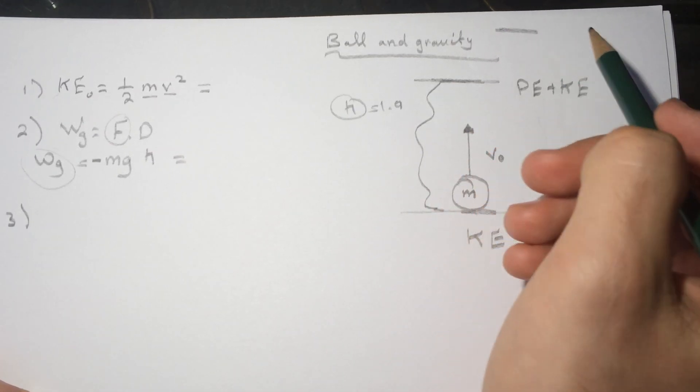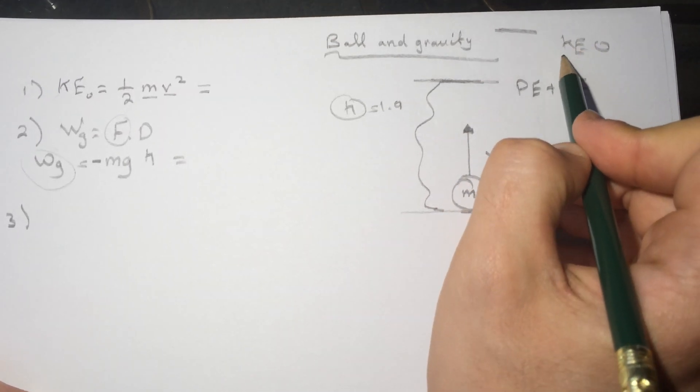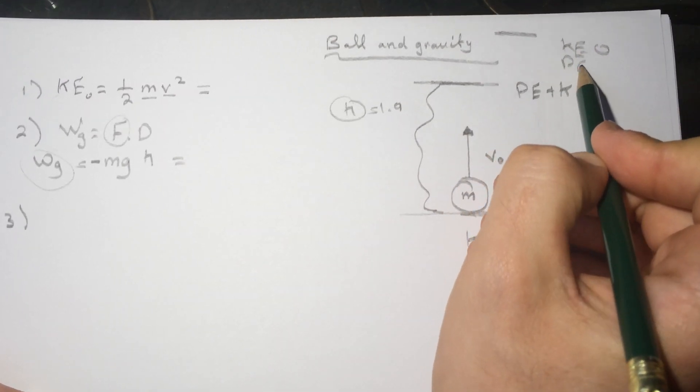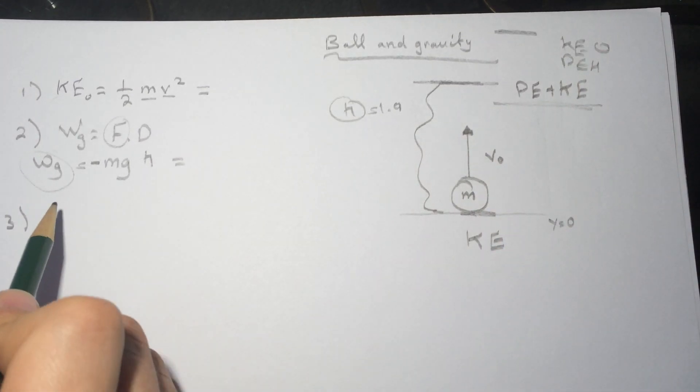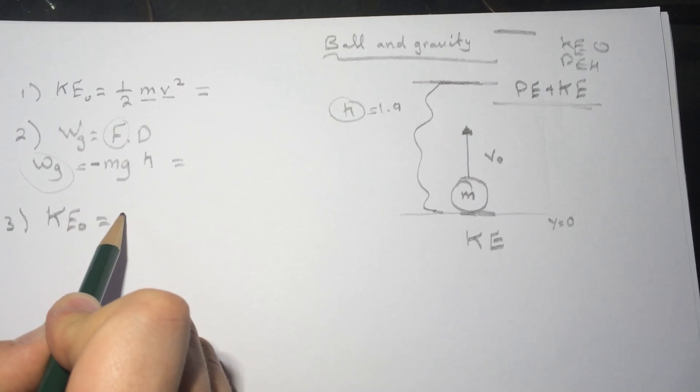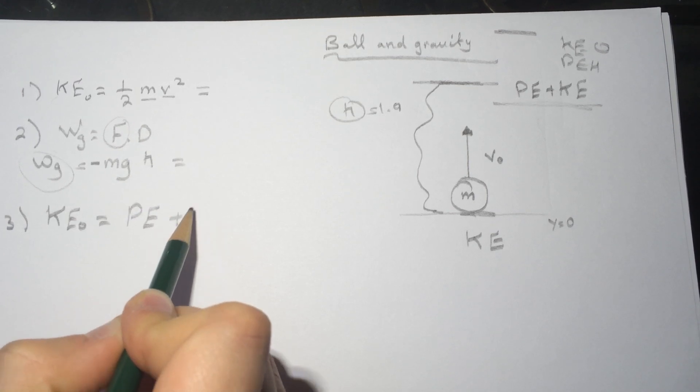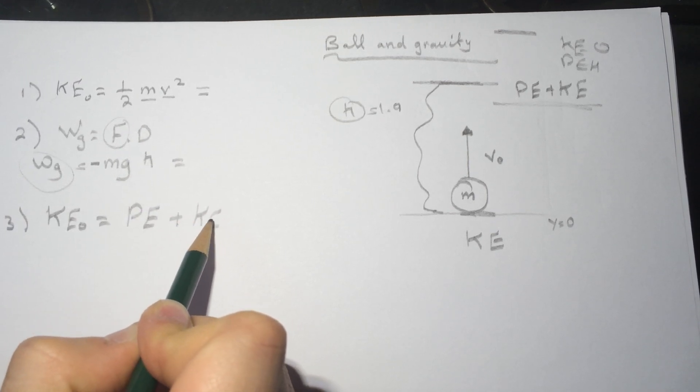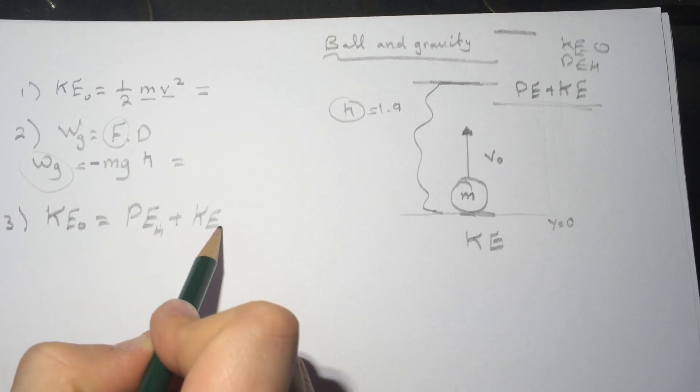reach some level that the KE is zero and then the PE is maximum. But here it's still PE plus KE. So KE initial equals PE plus KE at that time or at that height h.